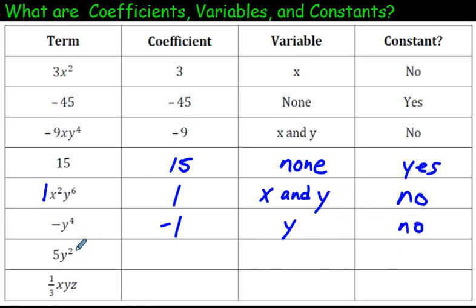We're going quickly here, because there's no need to drag this video out longer. Coefficient is 5. Variable is y. And no, it's not a constant.